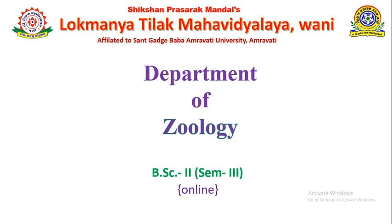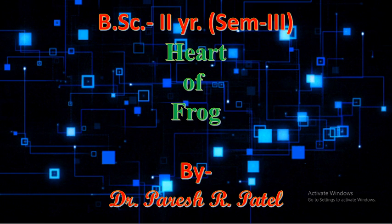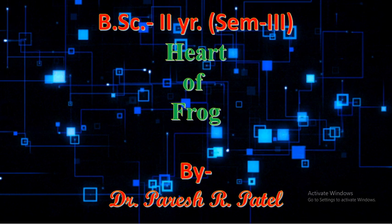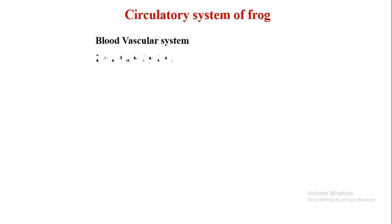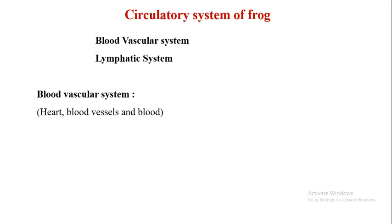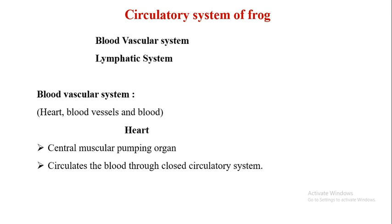Welcome to our class on the heart of frog and the circulatory system in the frog. The circulatory system consists of the blood vascular system and the lymphatic system. The blood vascular system consists of heart, blood vessels, and blood. The heart is the central muscular pumping organ of the circulatory system. In frog, the circulatory system is of closed type.